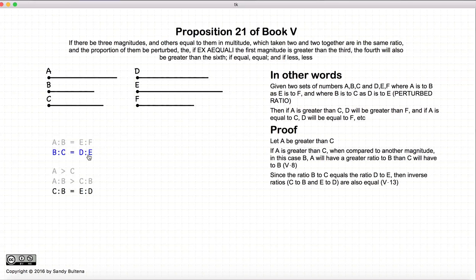Now B to C is equal to D to E, so the inverse is also true, according to proposition 13. CB is equal to E to D. Now if AB is greater than C to B, and C to B is equal to E to D, then A to B is greater than E to D. Just putting in the substitution right there.